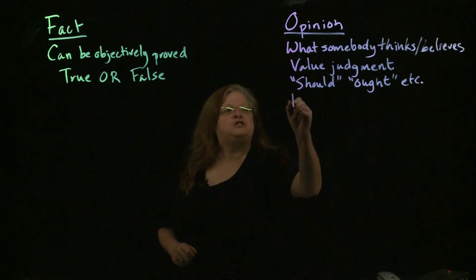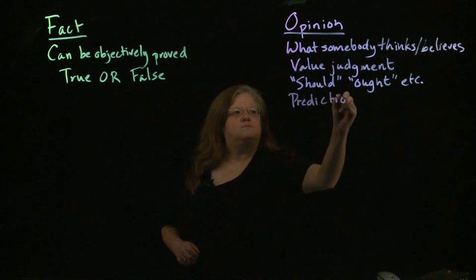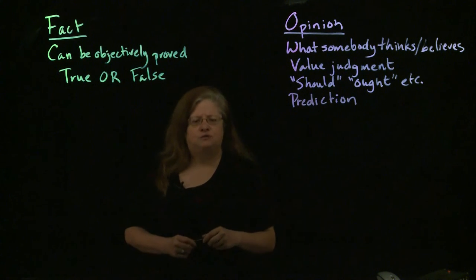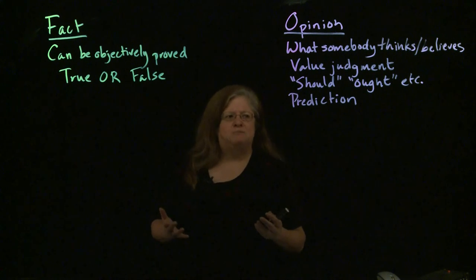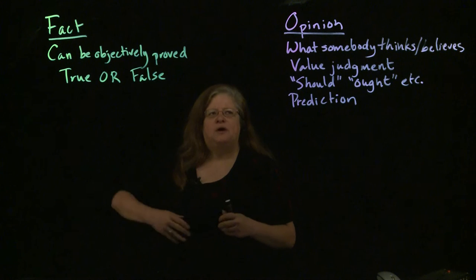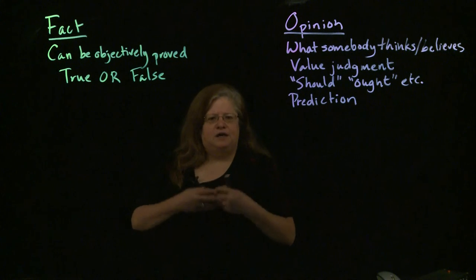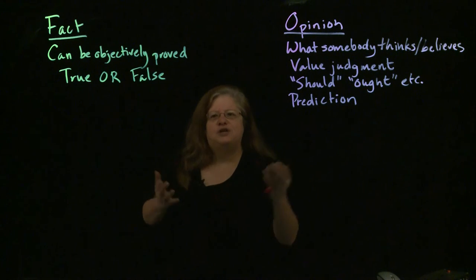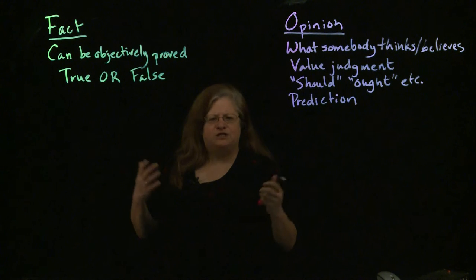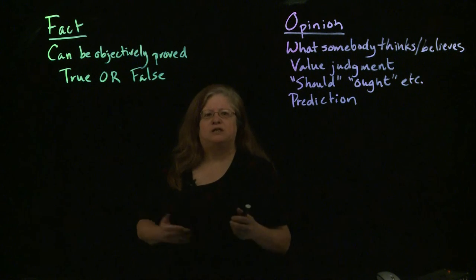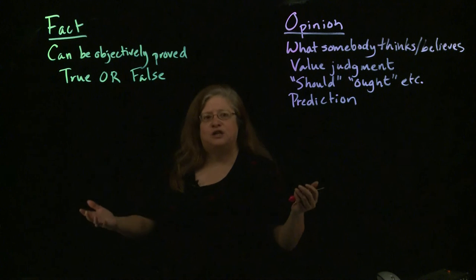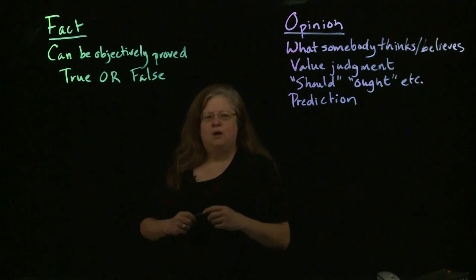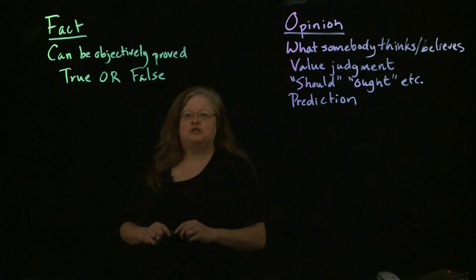Another form of an opinion is a prediction, because nobody really knows for sure what is or is not going to happen in the future. There's no way to know absolutely for certain that something's going to happen. A good example is the weather person on television news who is predicting what the weather is going to do tomorrow. Sometimes the prediction turns out accurate and sometimes not. Nobody knows the future, so a prediction is another form of opinion.